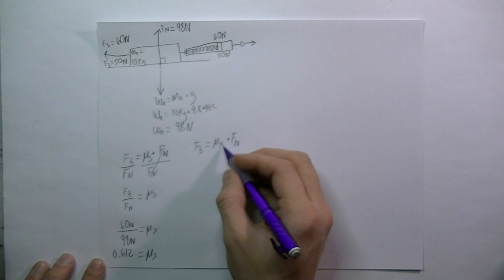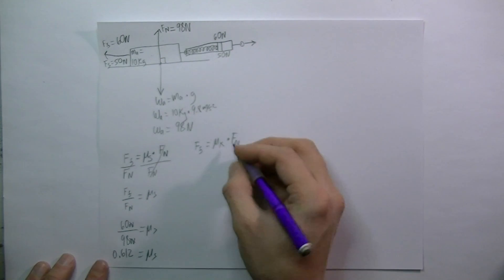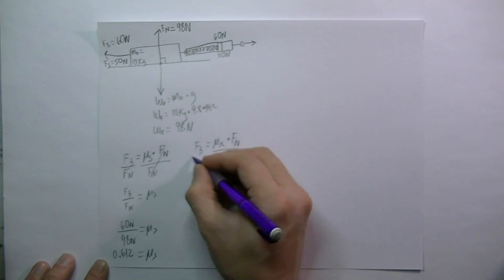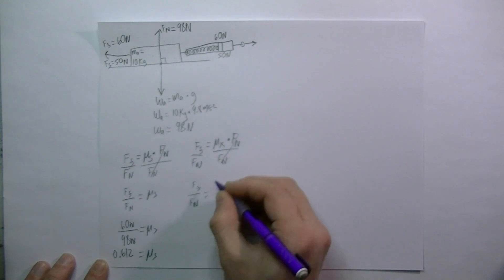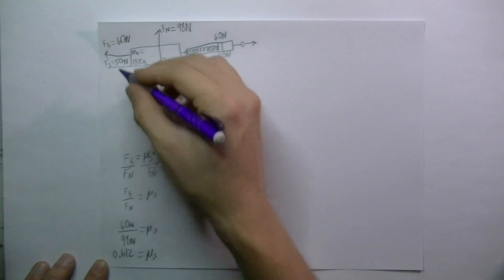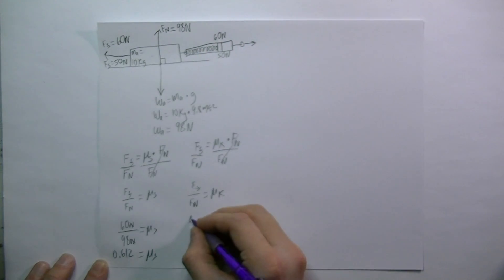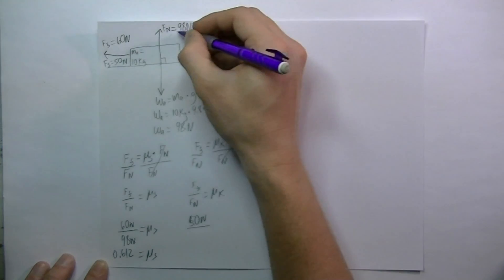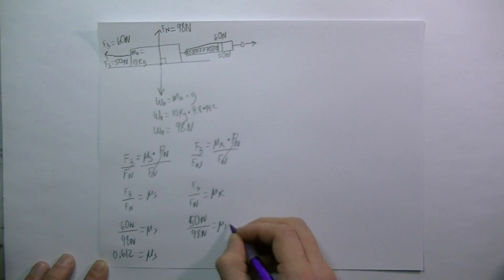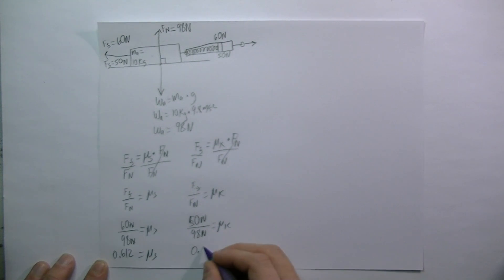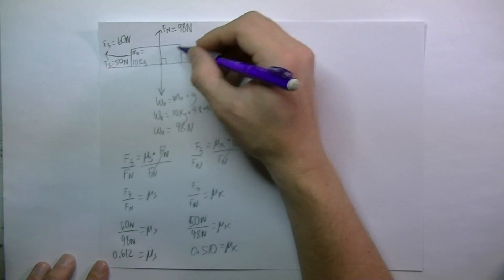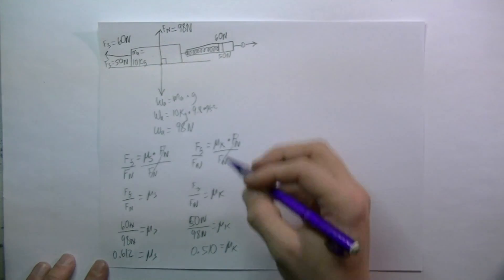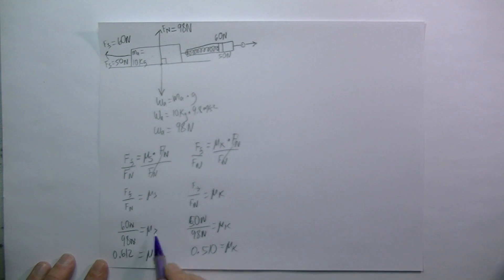For kinetic friction, we divide both sides by the normal force: μ_kinetic = F_friction / F_normal. The frictional force was 50 newtons and the normal force was still 98 newtons, giving us 50 / 98 = 0.510 for the coefficient of kinetic friction. So after the block is in motion, it required less force — only 50 newtons — and the coefficient of friction is lower than the static value. Once the block is in motion, the number goes down.